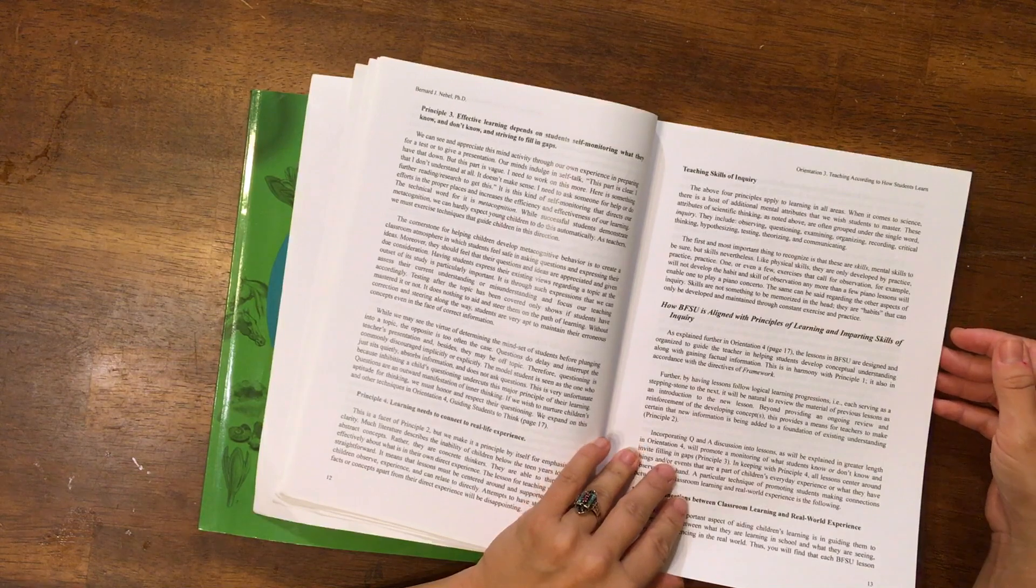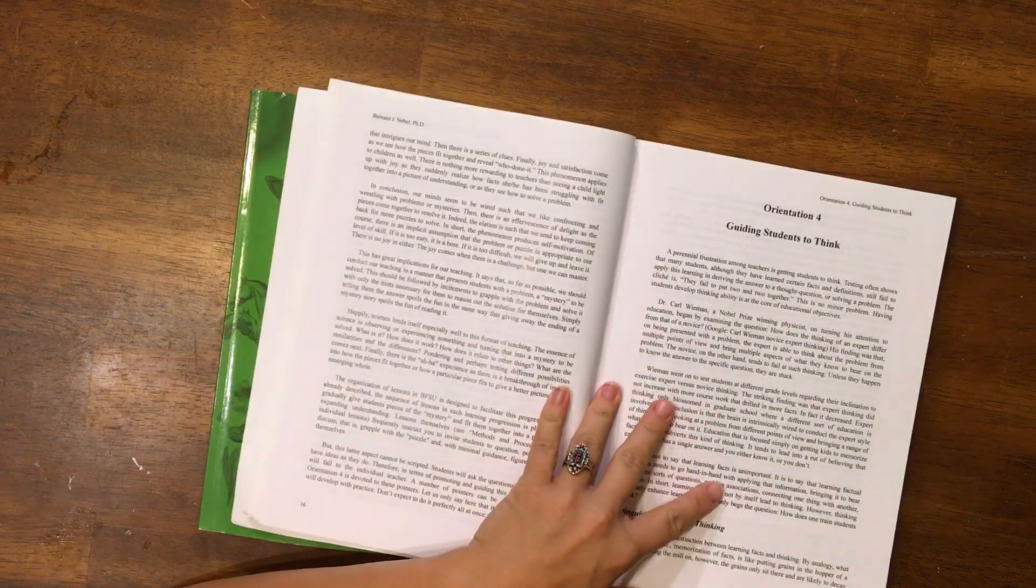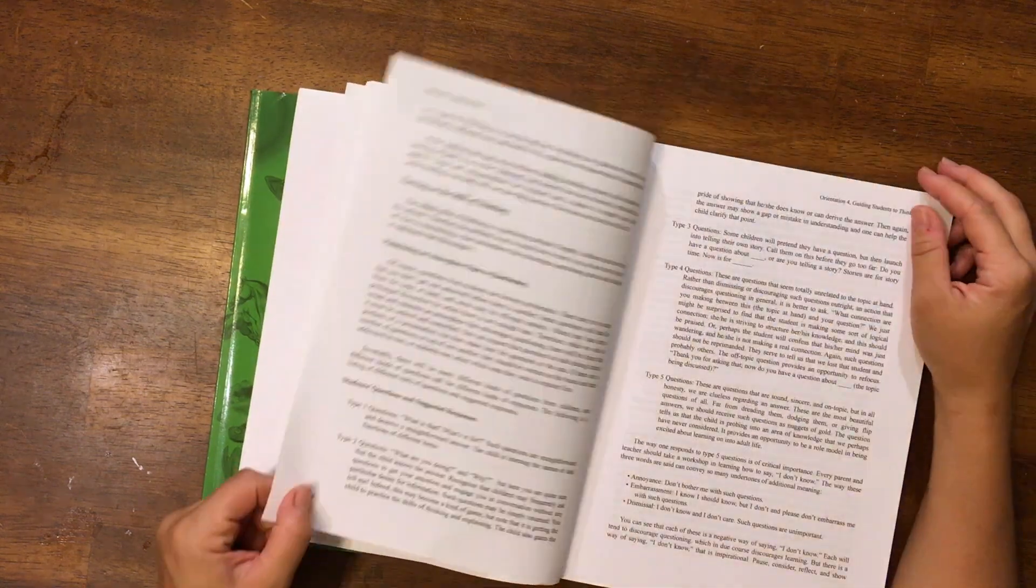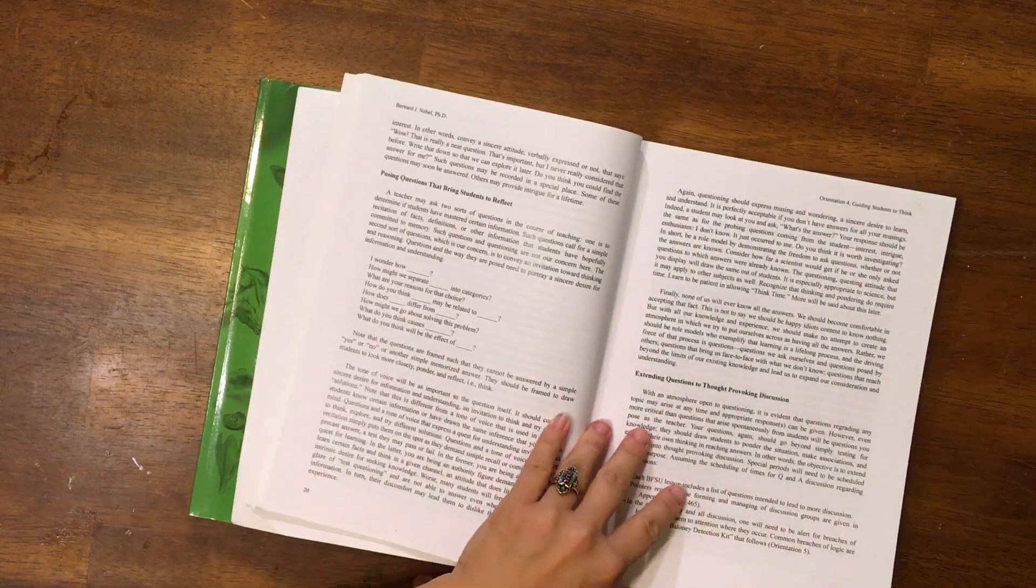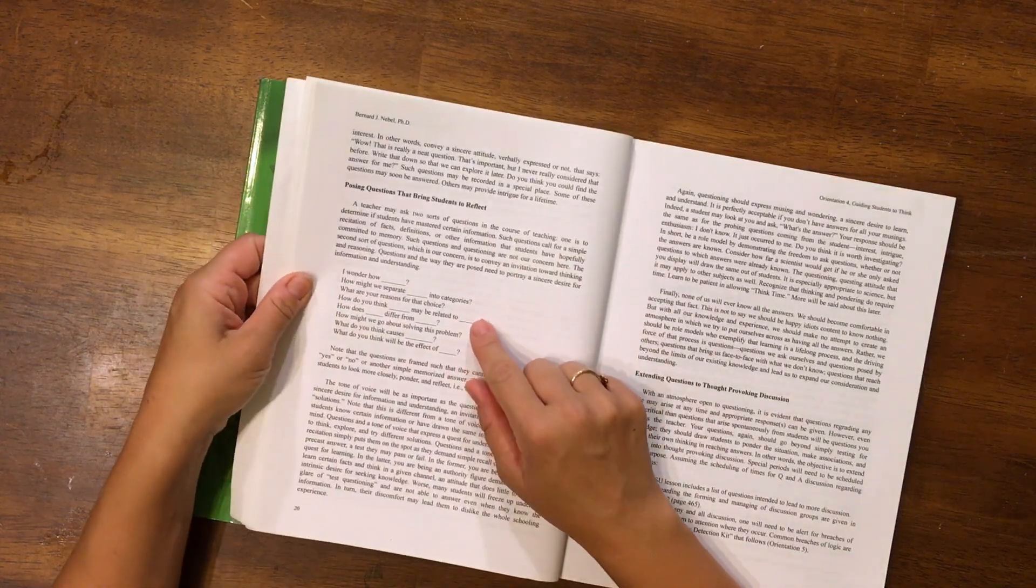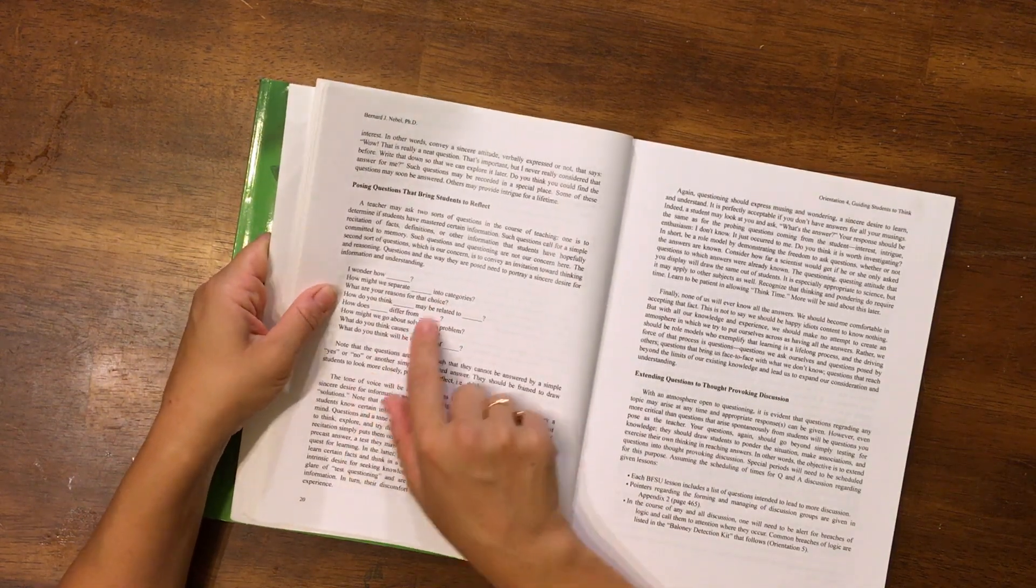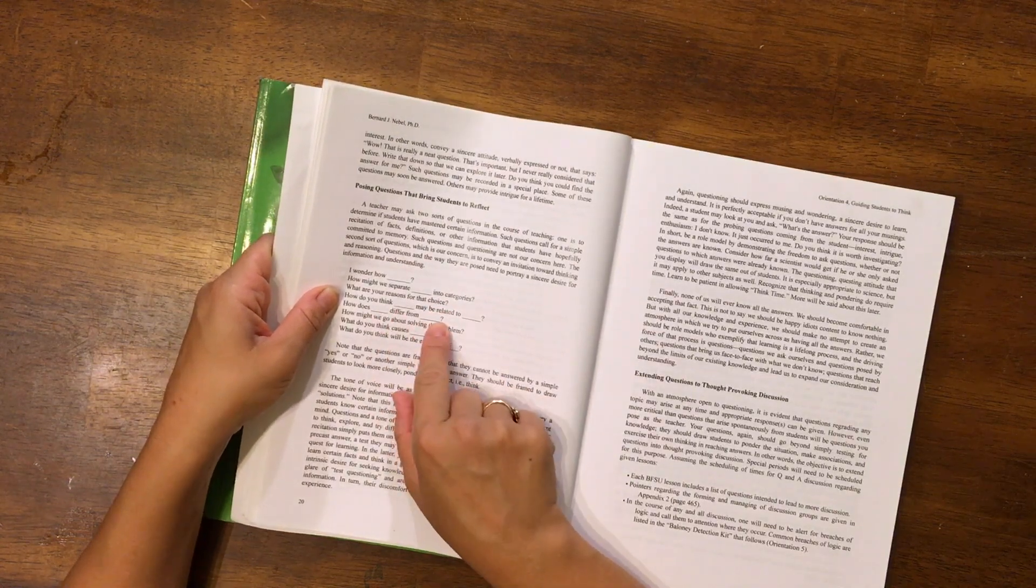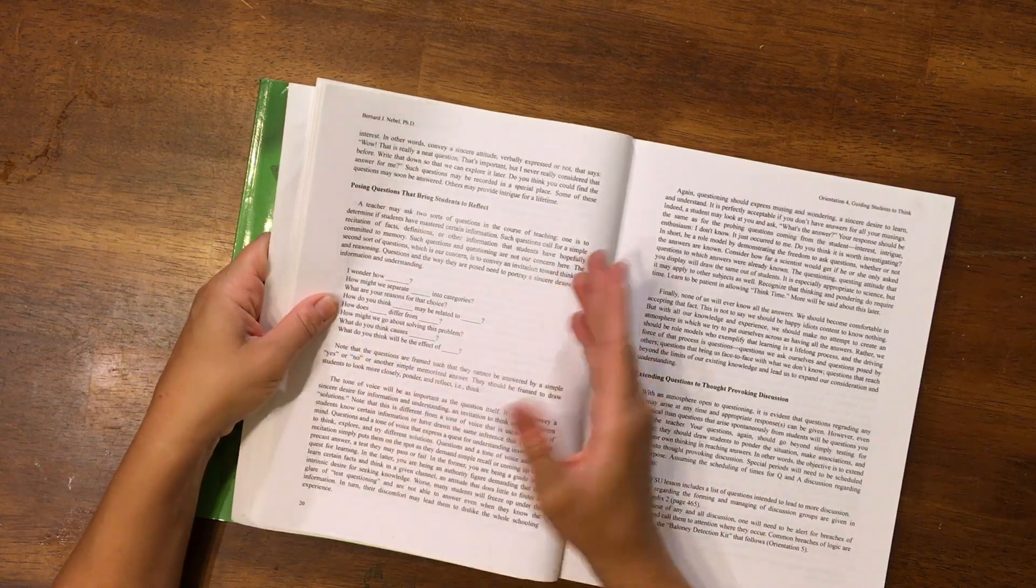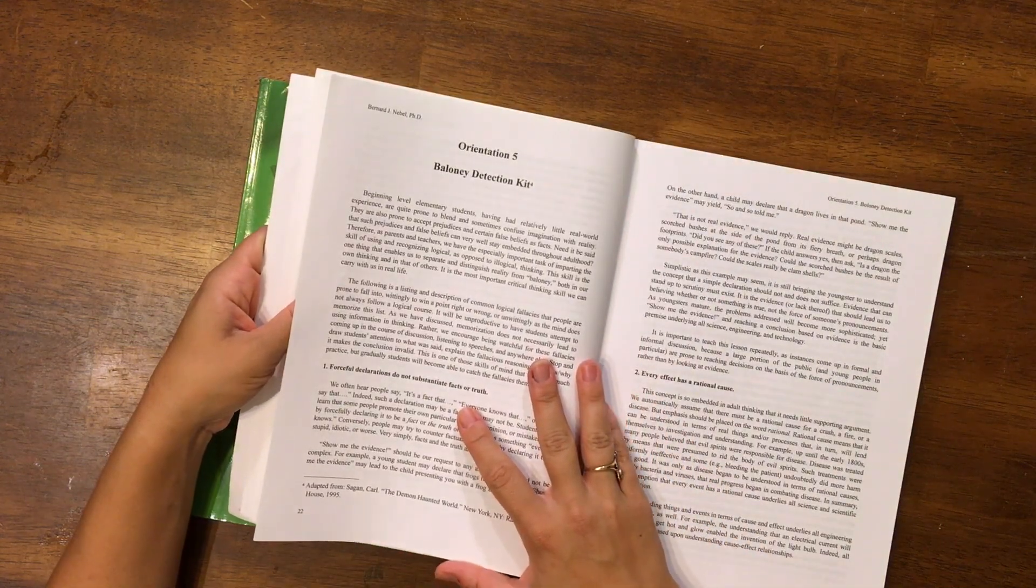It really teaches kids how to inquire, and I really like an inquiry method of teaching because it really teaches the kids how to think for themselves, how to ask questions. Here are an example of questions: I wonder how, how might we separate these into categories, what are your reasons for that choice, how do you think this might be related to that, how does this differ from that. These questions set your parent up for being able to teach science without any scientific background at all.